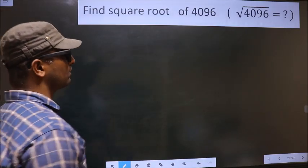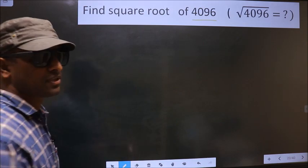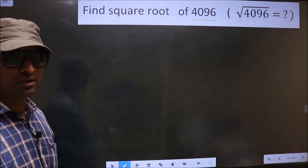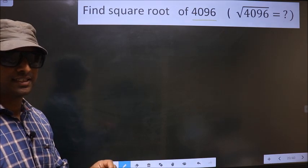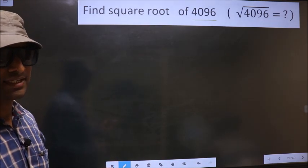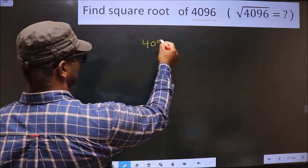Find square root of 4096. To find the square root by long division method, first we have to frame it in this way. 4096.